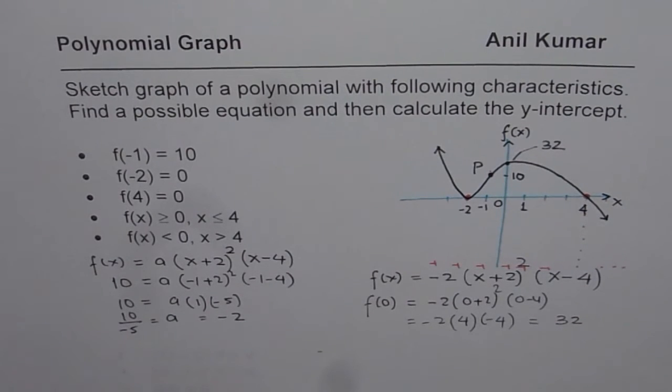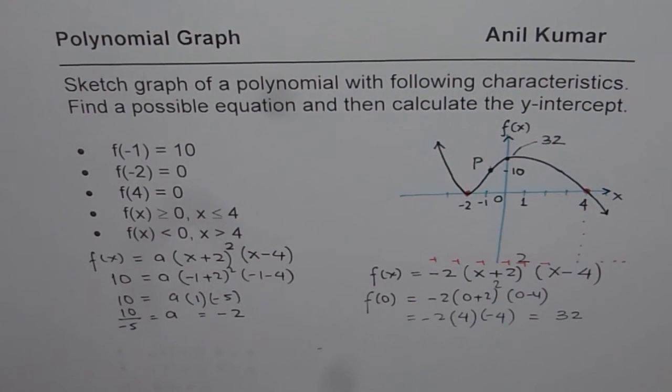So I hope you understand the whole concept here. From the given conditions, we first sketch the graph. From the graph, we found a possible equation. And then we found the y-intercept. Now these are very critical steps. Go through them and I hope with this, you understand the whole chapter. I'll take a few more polynomial graphs where the main focus will be on characteristics. I hope that should help you. Thank you and all the best.